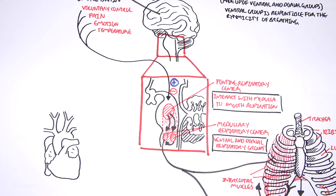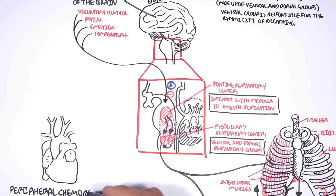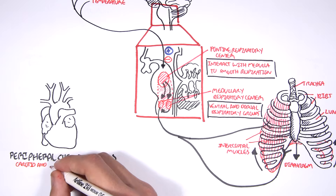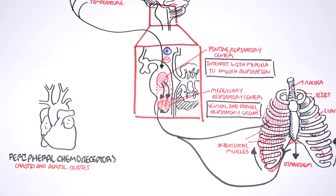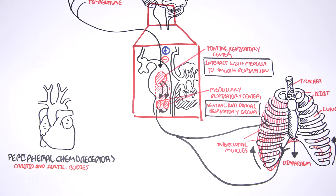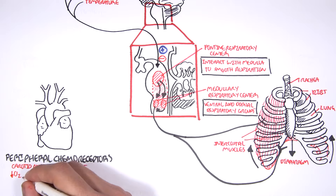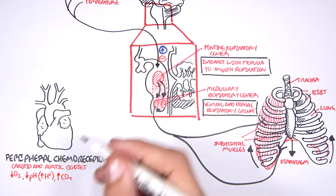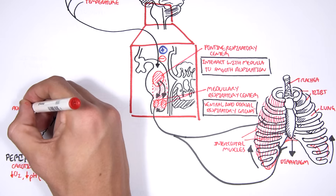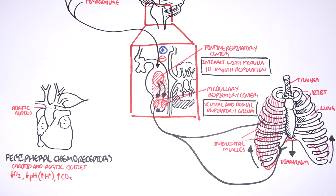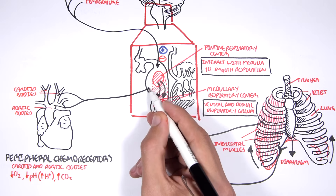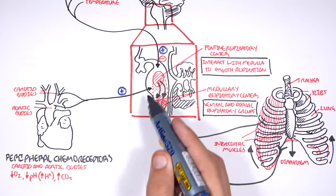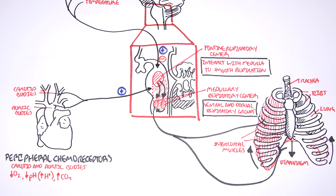The main regulator of respiration would be the peripheral chemoreceptors, which are located in the carotid and aortic bodies. They detect chemical changes in the blood. For example, if they detect a decrease in oxygen, a decrease in blood pH — meaning an increase in hydrogen ions — and an increase in CO2, this will stimulate the chemoreceptors in the carotid and aortic bodies. These will then stimulate the respiratory center, resulting in a quicker respiratory rate so you can breathe in more oxygen and breathe out more carbon dioxide.